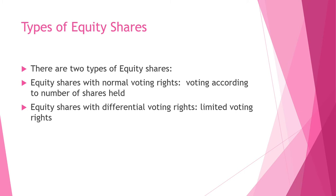A company issues differential voting rights shares when a person is not interested or may not be able to attend the general meetings. Such people may be given an extra rate of dividend. All this depends on what is mentioned in the articles and memorandum of association of that particular company.